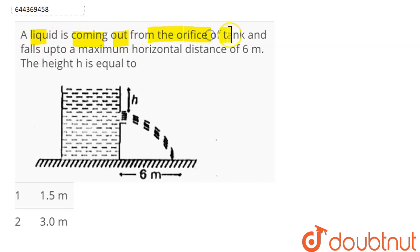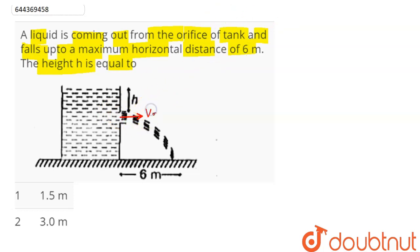The question: a liquid is coming out from the orifice of a tank and falls up to a maximum horizontal distance of 6 meters. Find the height h. The velocity of the liquid emerging from the orifice is given by the formula v = √(2gh), where h is the height of the water level from the top to the orifice hole.